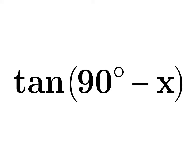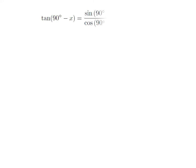In this video, we will learn to find the value of tangent of 90 degree minus x. As we know, tangent of theta is equal to sine of theta divided by cosine of theta.